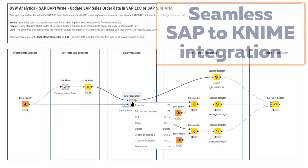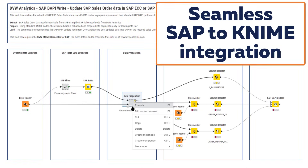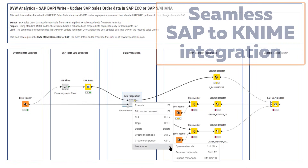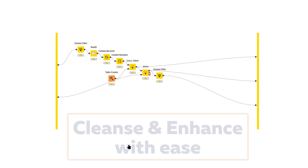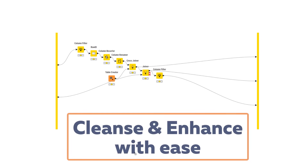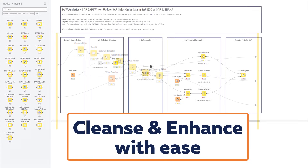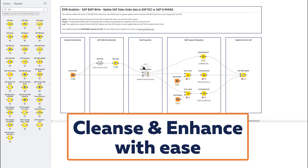Once we have the SAP data in KNIME, we can combine it with data sets from other SAP or even non-SAP sources, and use all the great functionality in KNIME to enhance and prepare it.